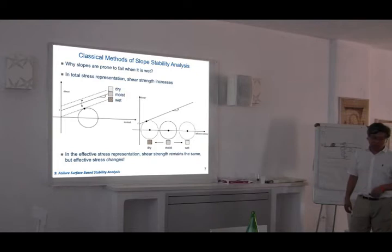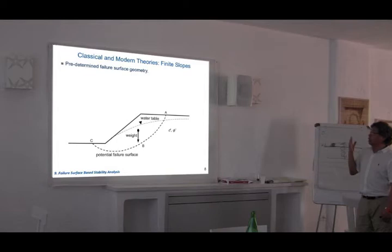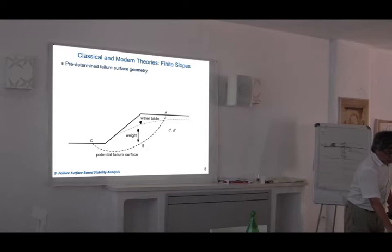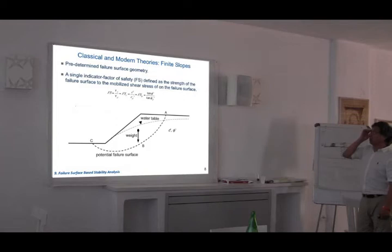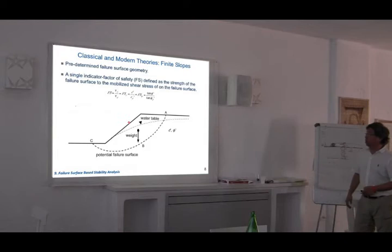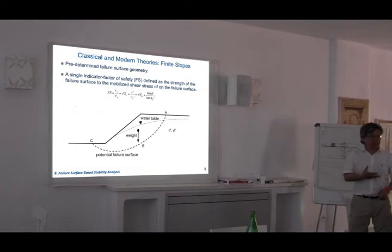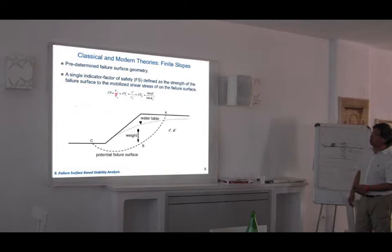When the stress reaches the failure envelope, it's going to fail. Now let's look at the slope in reality — the determining factor for failure is what we call the factor of safety. Factor of safety can be defined in slightly different ways, but most commonly it looks at a predetermined failure surface. This is the classical methodology of limit analysis. The geometry is assumed — circular, straight line, or other geometry. We look at the shear strength along that line and compare it to the shear stress, which is calculated from geometry and material conditions. The ratio of these gives the factor of safety.